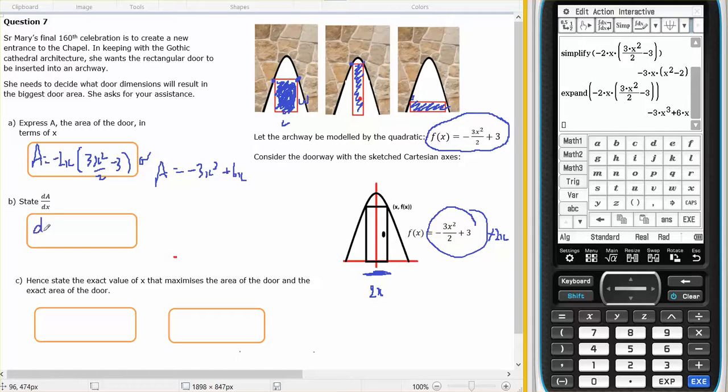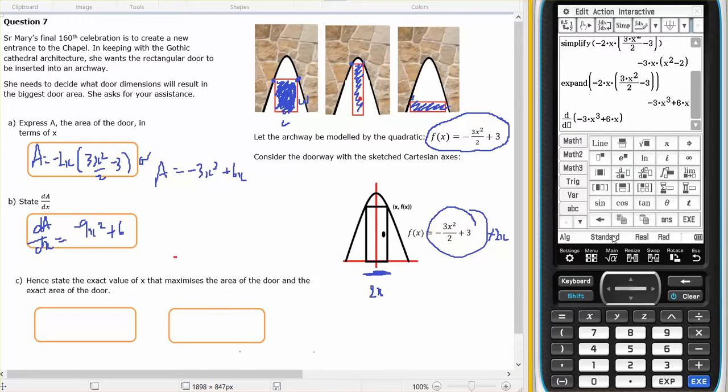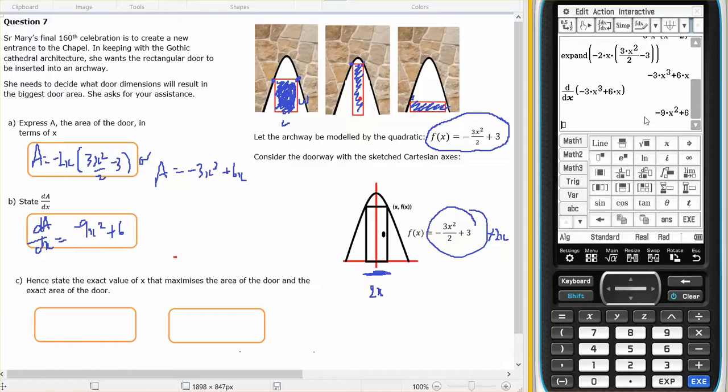The derivative, well, I can use my calculator, or I can go 3 times 3, minus 9X squared, plus 6. And because I've got my calculator, I'll double check that with respect to X, gives me an expression of, lo and behold, it's the same answer.